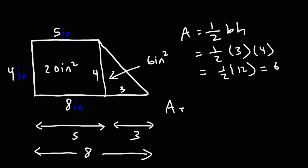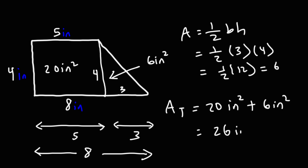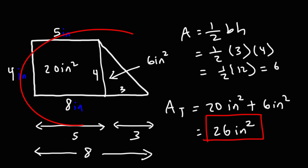Now we can calculate the total area of the composite figure. It's going to be 20 square inches plus 6 square inches, giving us a total of 26 square inches. That's the area of this particular composite figure.